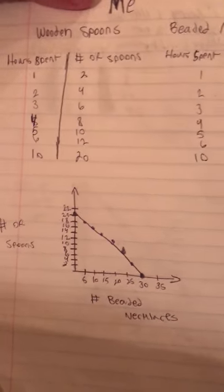And then this graph shows the correlation between number of spoons and number of beaded necklaces and where they align.